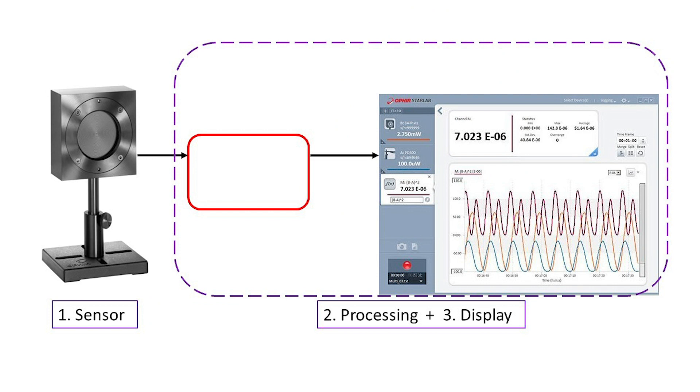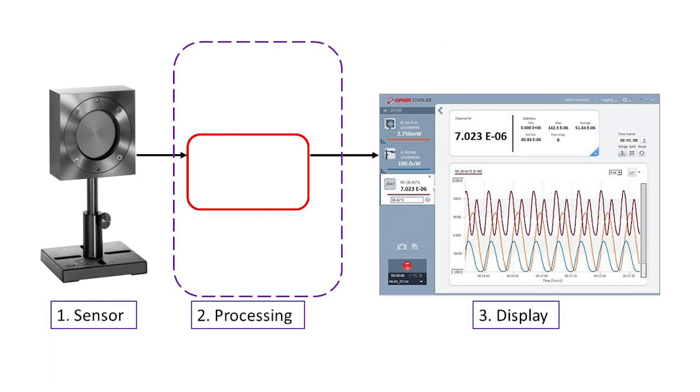Sometimes, you might not need part 3 though. If you do all your work connected to a PC, for example, it can do the displaying. You'll need the sensor and the processing. But if your PC can take care of the displaying, then you don't need that in your laser power meter. You can then end up with a smaller and cheaper instrument.